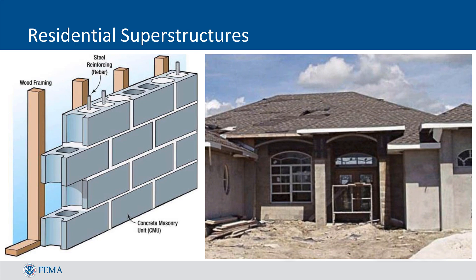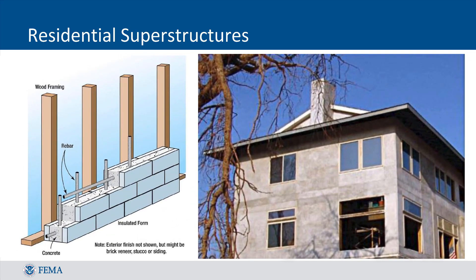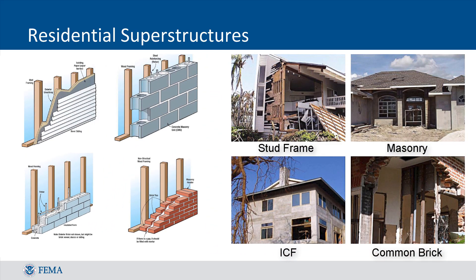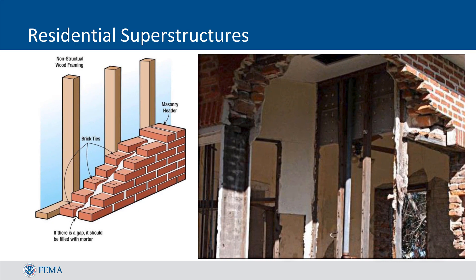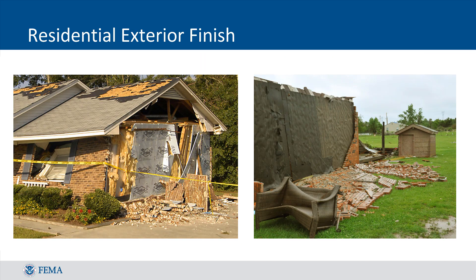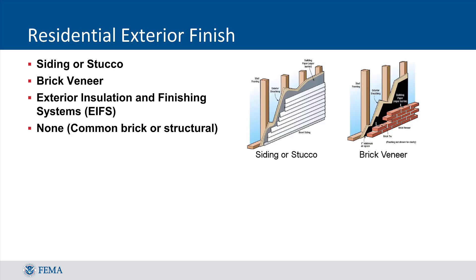Masonry construction uses concrete masonry units or CMUs that are stacked and mortared together, while ICF uses a synthetic forming system that is filled with concrete to provide structural support. One of the most common errors when carrying out assessments is to identify bricks on the exterior of the structure and assume that the superstructure type is common brick. A common brick superstructure requires the brick to be a part of the support system for the structure. Homebuilders may use a brick veneer on the outside of a structure, which is an exterior finish that does not provide any structural support and is often added to provide a different aesthetic to the home. There are also four types of exterior finish that can be selected in SDE, with the most common types generally being siding or stucco and brick veneer. A siding or stucco finish is relatively common in the United States and generally refers to a vinyl, aluminum, wood, or stucco finish.